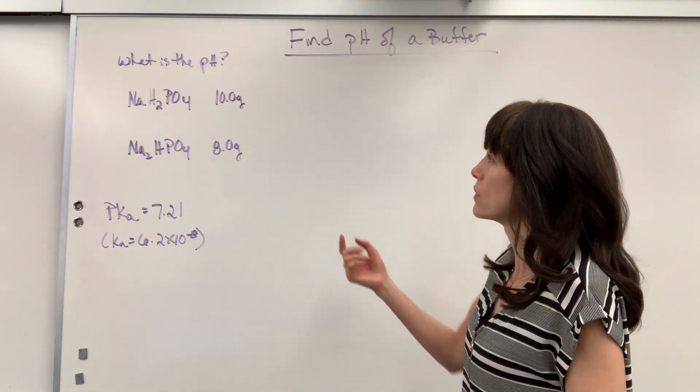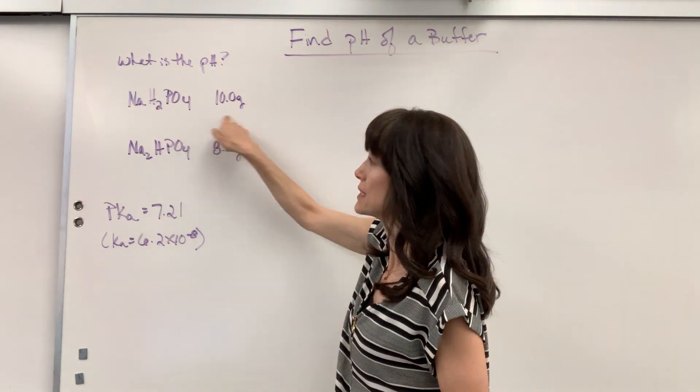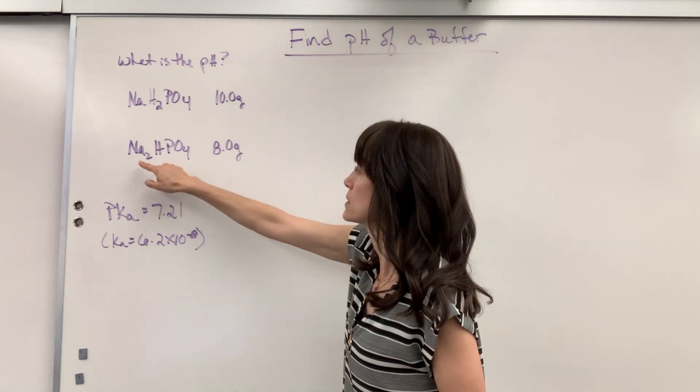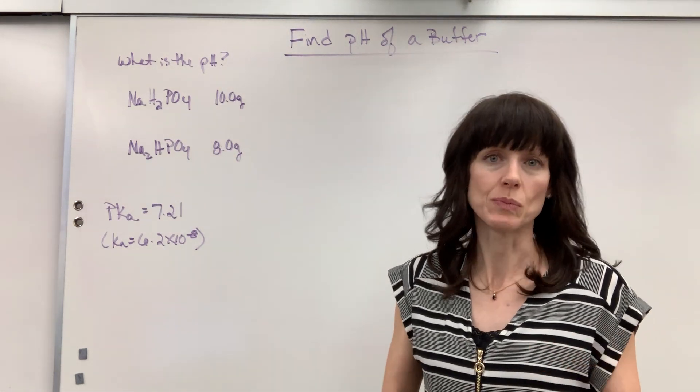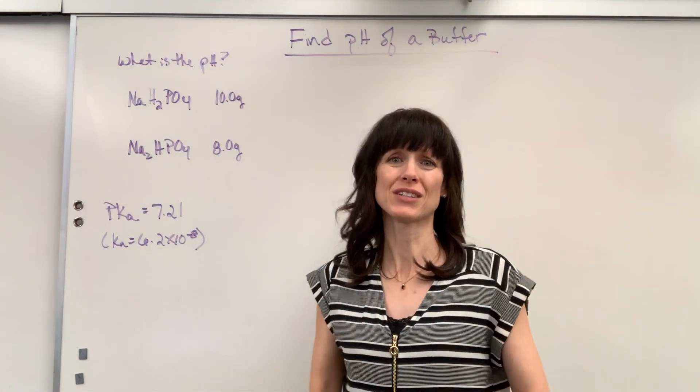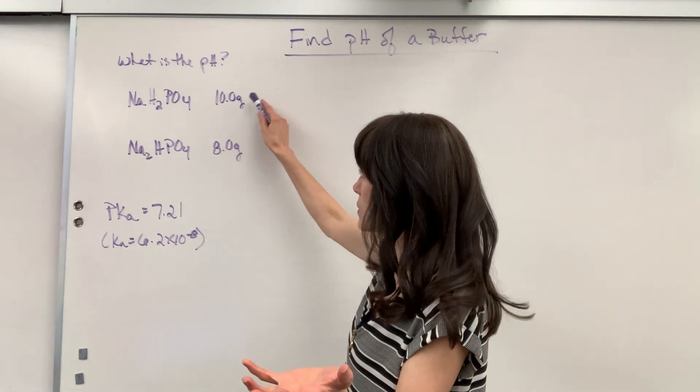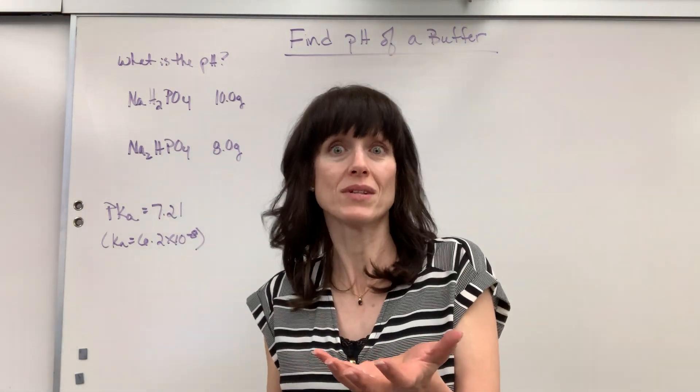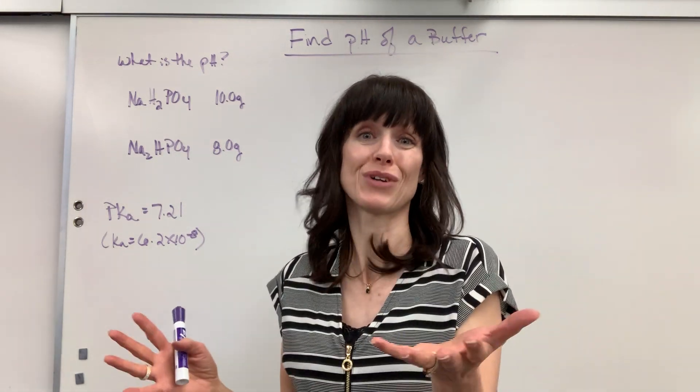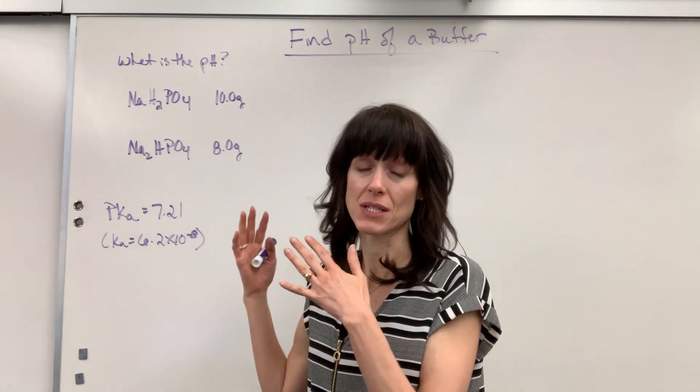So here we have it. You are told that you're going to mix the sodium dihydrogen phosphate, 10 grams of that, with sodium hydrogen phosphate and you have 8 grams of that and it wants to know what's the pH of the buffer. So no titration in this. I'm just going to take, let's say they want 500 mils. I'm going to take my 500 mils, weigh out 10 grams of this, 8 grams of this, drop it in there and I want to know what's the pH of this buffer. No titration. We're just making a straight up buffer and they're telling us exactly how to make it.